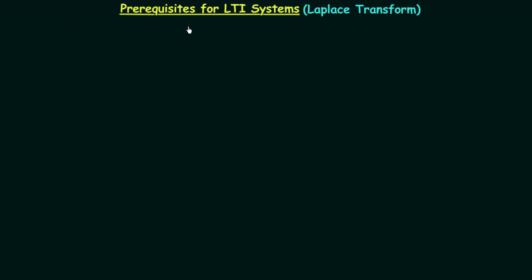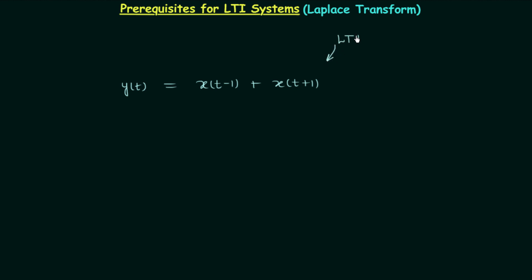Welcome to the second part of prerequisites for LTI systems. In the previous part we revised all the conditions required for a system to be linear as well as time invariant. Now in this part I will explain the use of Laplace transform in analyzing LTI systems. To understand this, I will take one system relationship: y(t) = x(t-1) + x(t+1). You can verify this relationship is that of a linear time invariant system, and now we are interested in analyzing this system to comment about its other properties.